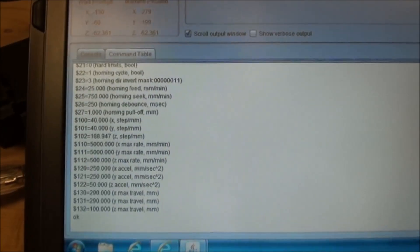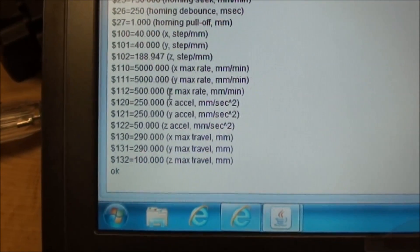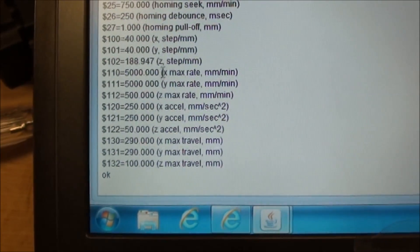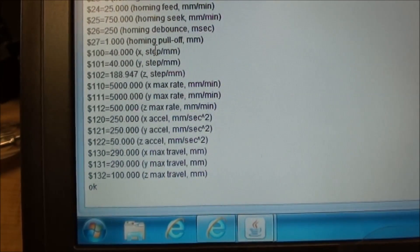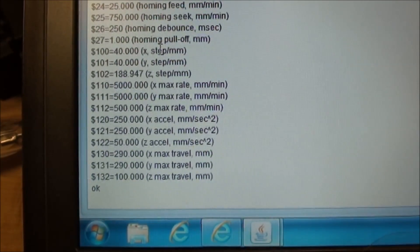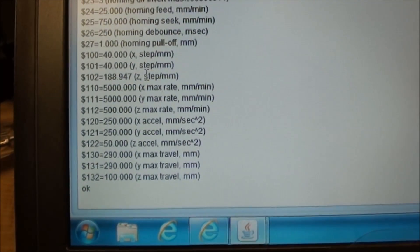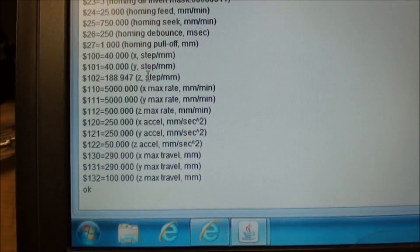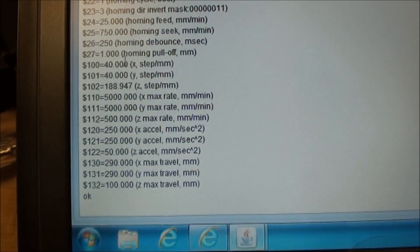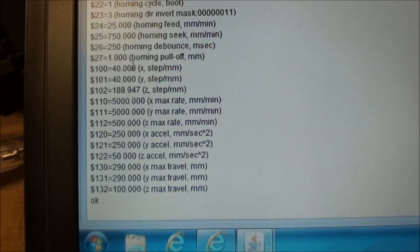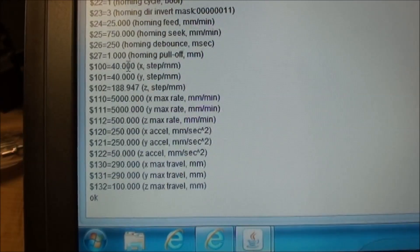The ones we should be looking at is the steps per millimeter. Here we have 40 for X, 40 for Y, and 188 for Z axis. If they are not correct, if we don't get the right amount of millimeters out of a certain command, then what we do is simply go in and change the steps per millimeter amount.